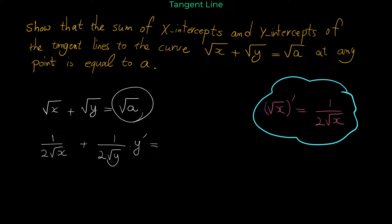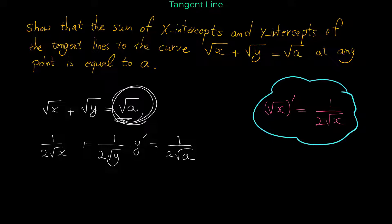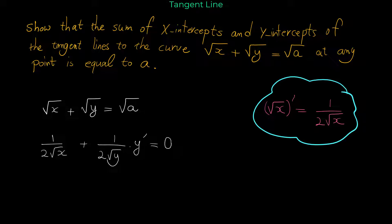In implicit differentiation, when we take the derivative of a term involving y, we have to multiply it by y-prime. For the right side, you might make the mistake of writing one over two radical a — but attention, a is a constant, and x and y are the variables. So the derivative of radical a is zero. The derivative of any constant is zero.